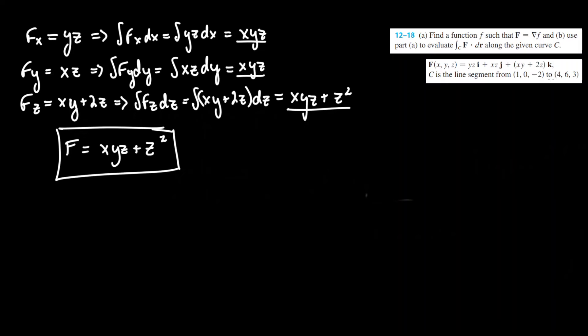Now what we have to do is evaluate it along the line from (1, 0, -2) to (4, 6, 3). Luckily that's pretty simple. All we have to do is xyz plus z squared evaluated between these two bounds. We can do this simply because f is a potential function, so therefore path won't really matter in this case.